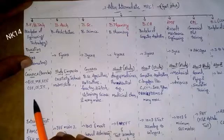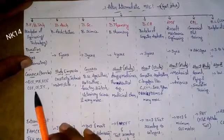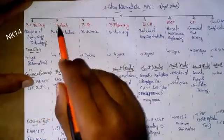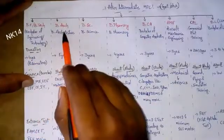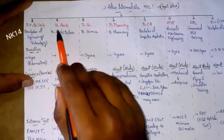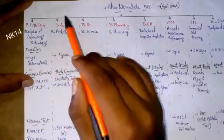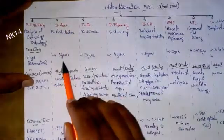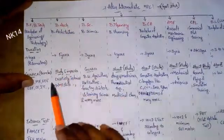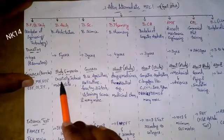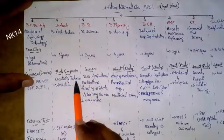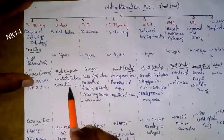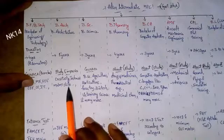Next is Bachelor of Architecture, that is B.Arch. The duration for this is five years. The skills you can develop here include creativity, technical skills, management skills, and many more improvements you can get in Bachelor of Architecture.